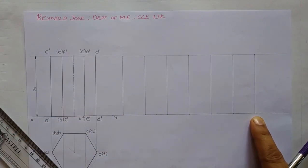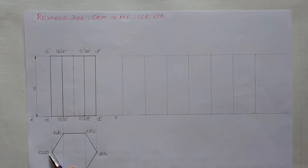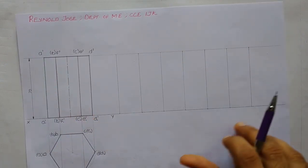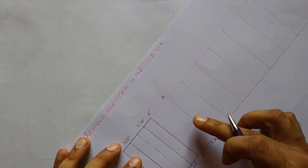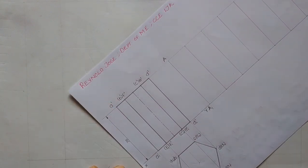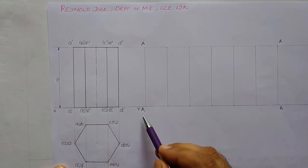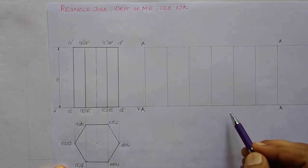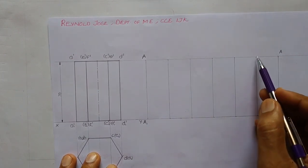Now we name the development. We assume the solid is unfolded with respect to edge AA1, where A is on the top surface and A1 is on the base. This edge appears at both the left and right extremes of the development. Moving clockwise, the corners are named A, B, C, D, E, F on top and A1, B1, C1, D1, E1, F1 on the base, ending again at A and A1.